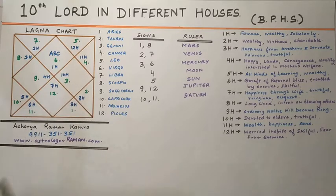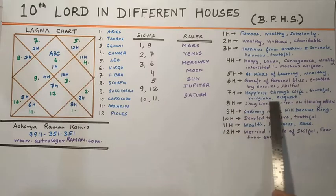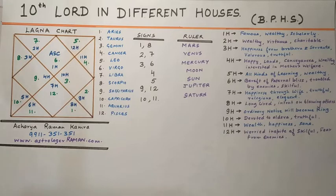If the 10th Lord is placed in the 6th house, the native will be bereft of paternal bliss. Although he may be skillful, he will be bereft of wealth and also troubled by enemies.